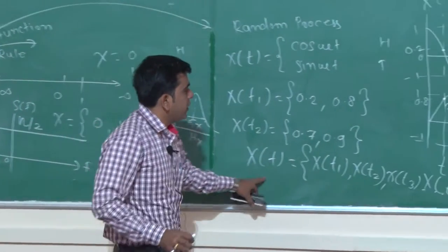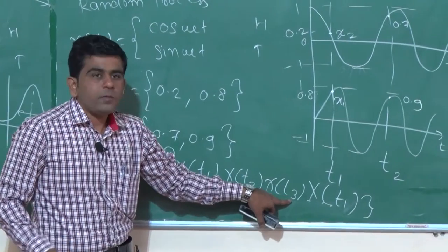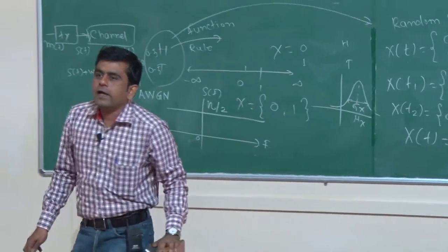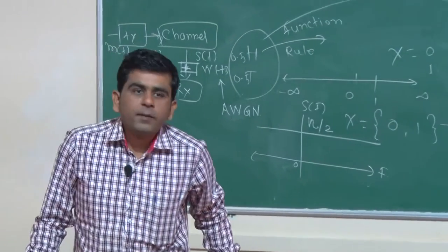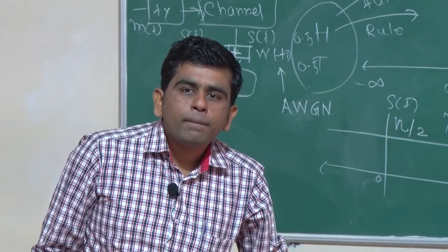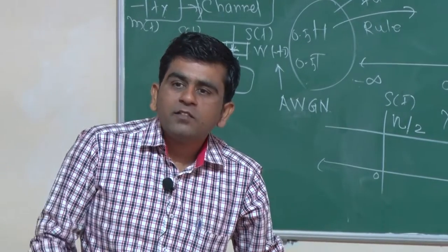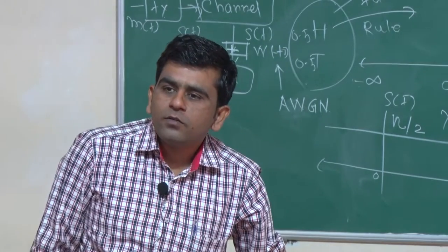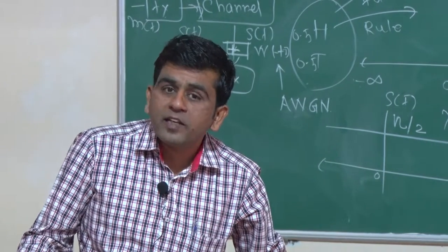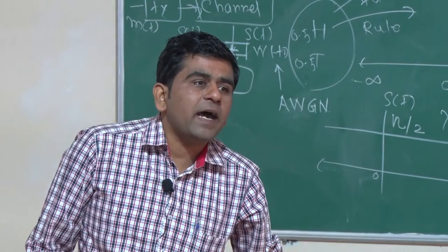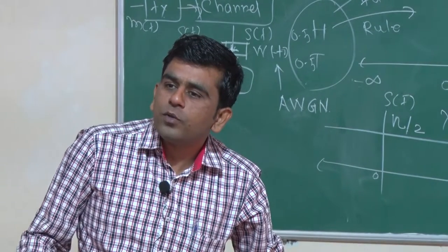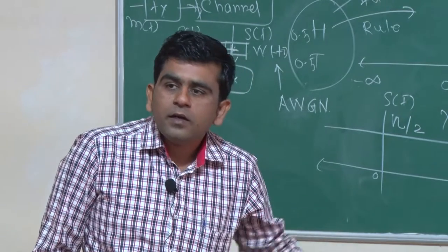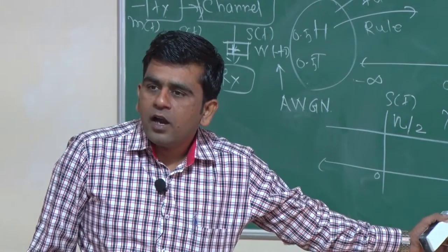So this is a random process — random process is nothing but a collection of time-indexed random variables t1, t2, t3 up to t-infinity. So x(t) can be represented as x(t1), x(t2), x(t3), and so on. Random process generally depends upon your time. In our case we can apply this random process for any signals; we can apply this random process for your image also, but their independent parameter is different. In an image we take the independent parameter as intensity; here the independent parameter is time t.